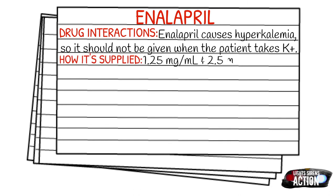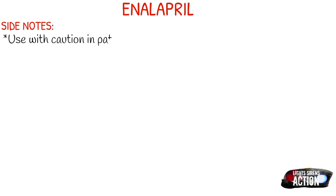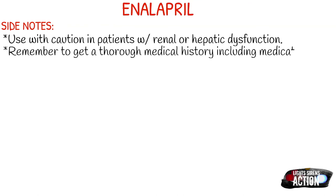How it's supplied: 2.5 milligrams in a 2 milliliter vial. A few side notes about Enalapril — use with caution in patients with renal or hepatic dysfunction, and remember to get a thorough medical history, including whatever medications they're on prior to administration, mainly because Enalapril can interact with other medications.